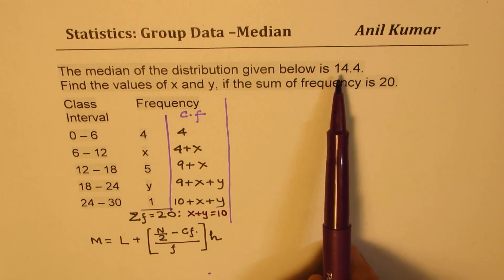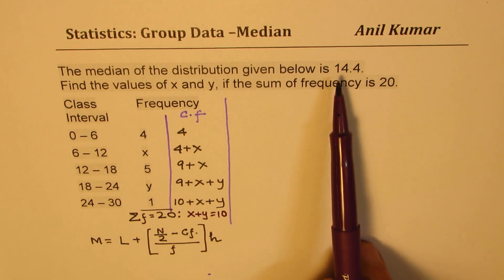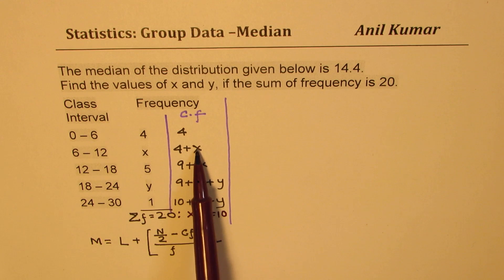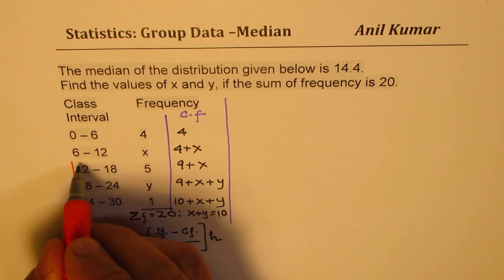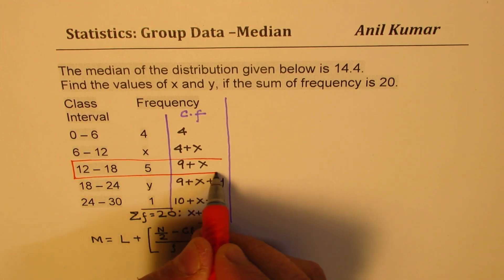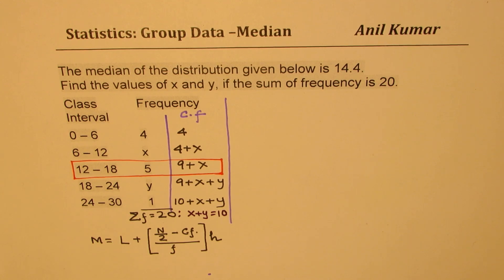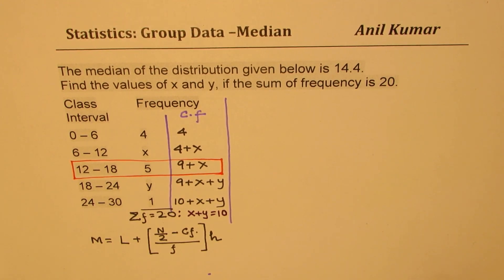Now let us try to understand the first statement: the median of the distribution is 14.4. Now where will 14.4 lie? As you can see, X plus Y maximum could be 10. Even if I take Y as 0, X can be at most 10. So with that we can only get a cumulative value of 14 in the previous class, not 14.4. That clearly indicates that 14.4 lies in the 12 to 18 group, which becomes our median class.